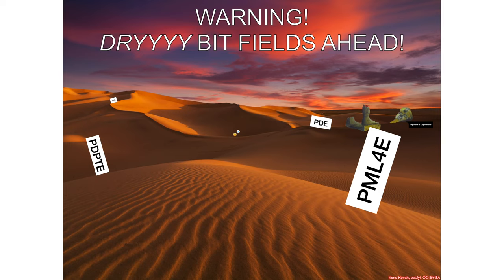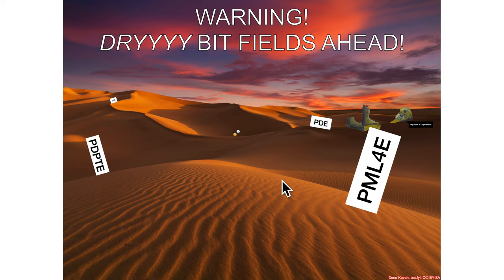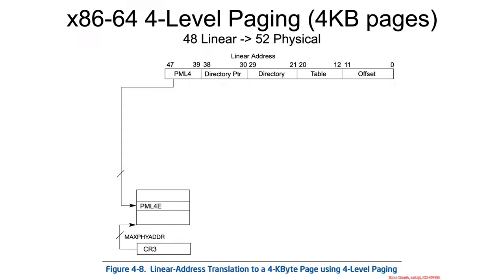In this section, we're going to dig into what's in all of these various entries, like the page map level 4 entry, page directory pointer table entry, and so on. Unfortunately, I have to apologize in advance — this is going to be pretty dry. I haven't found any particularly good way to spice it up. The only way out is through, so let's get to it.